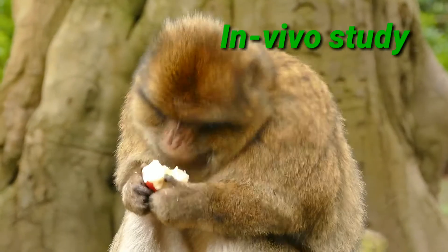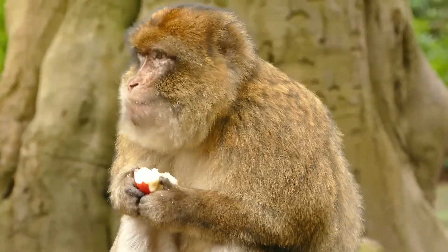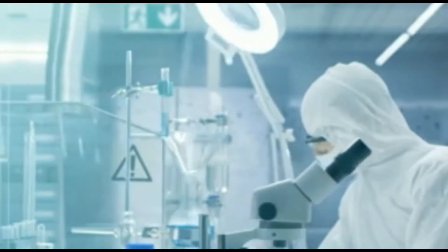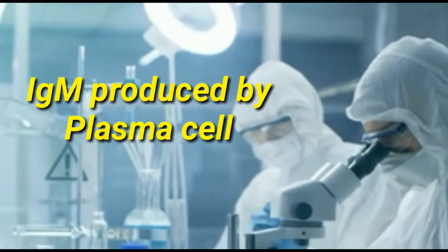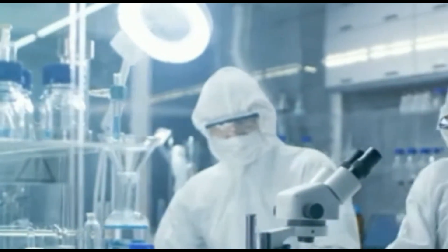Monkeys served as models for the in vivo study. Scientists first treated the animals with a man-made version of IgM, which is naturally produced by plasma cells located under the surface linings of the body's cavities.